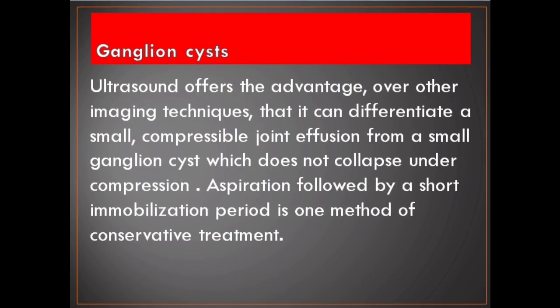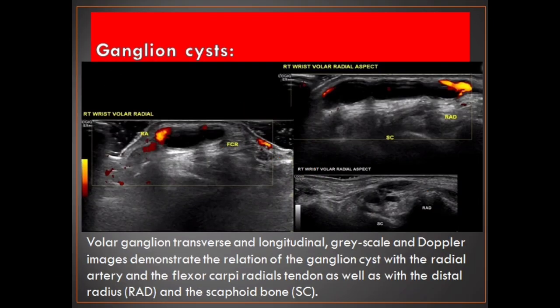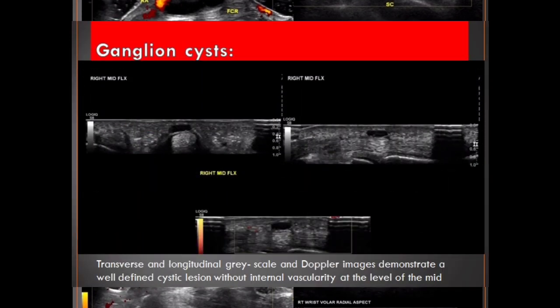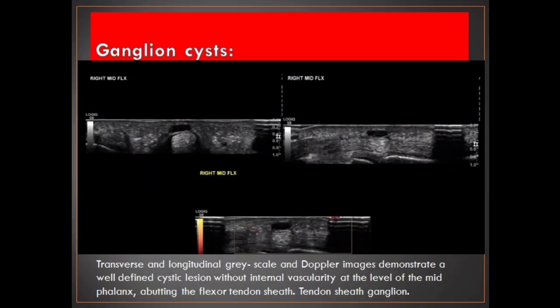Ultrasound offers the advantage over other imaging techniques that it can differentiate a small compressible joint effusion from a small ganglion cyst, which does not collapse under compression. Aspiration followed by a short immobilization period is one method of conservative treatment. Volar ganglion transverse and longitudinal grayscale and Doppler images demonstrate the relation of the ganglion cyst with the radial artery, the flexor carpi radialis tendon, as well as the distal radius and scaphoid bone. Transverse and longitudinal images demonstrate a well-defined cystic lesion without internal vascularity at the mid-phalanx, abutting the flexor tendon sheath — tendon sheath ganglion.